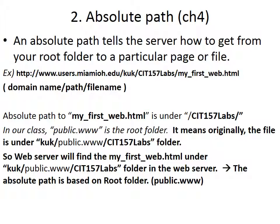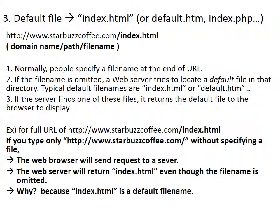An absolute path tells the server how to get a particular page or file from your root folder. For example, the URL would be http://www.users.miamioh.edu/kuk/cit157labs/myfirstweb.html, and then there is the myfirstweb.html file. Index.html is a common default web page file name — if there is an HTTP request to a folder without a specific file name, the default file will be sent.